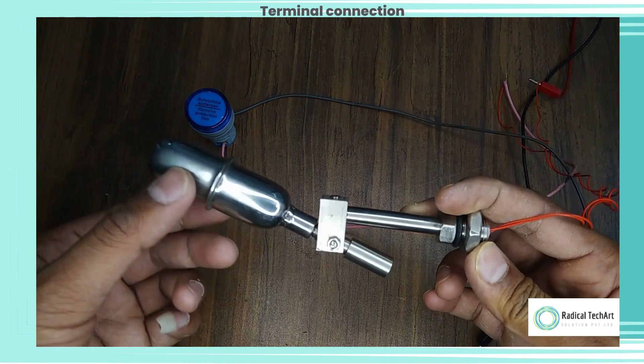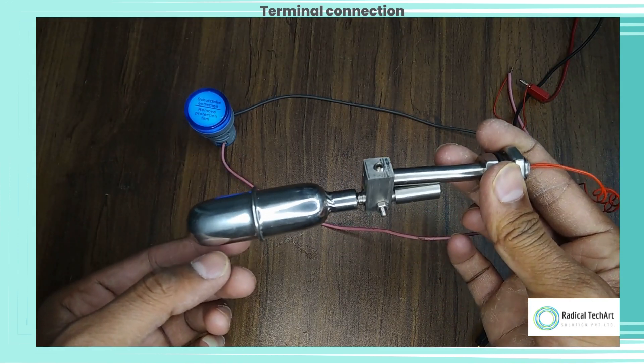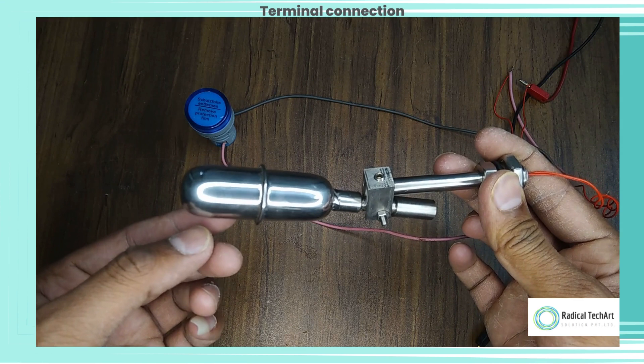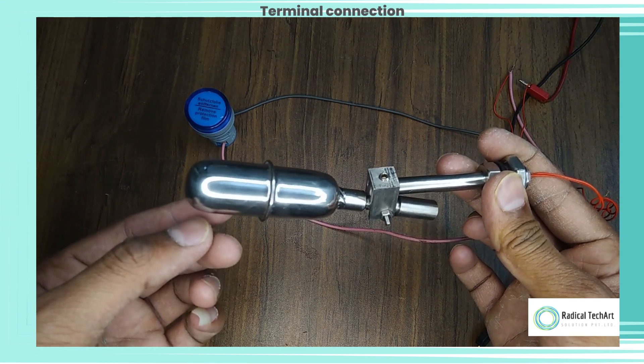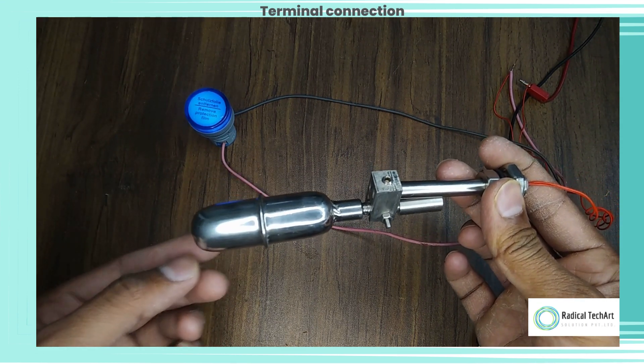Set the switch's set point to the desired level, which is the point at which you want the LED bulb to turn on. This is usually done by adjusting the position of the float on the lever arm or rod.